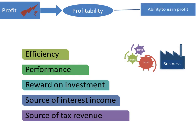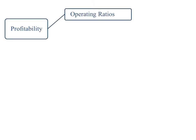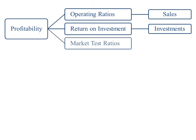It shows the degree to which profit is earned, and it is a measure of overall efficiency and effectiveness of management. There are generally three types of profitability ratios: operating ratios expressed in terms of sales, return on investment ratios expressed in terms of investments, and market test ratios expressed in terms of equity shares.